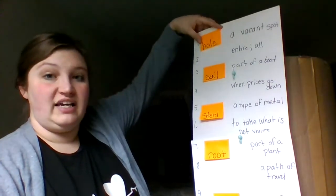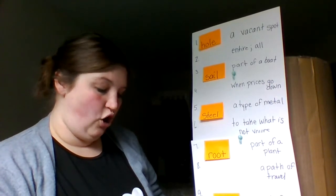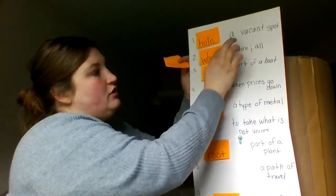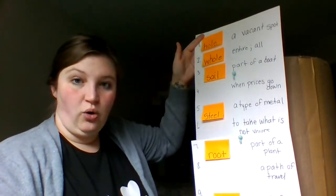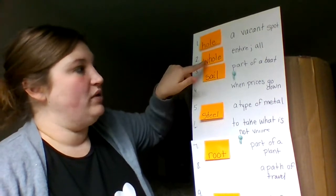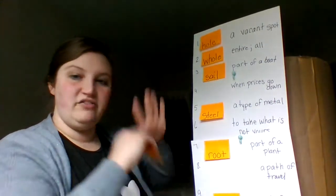I have the word hole, H-O-L-E, but now I'm going to add the word whole, W-H-O-L-E. They sound the same, hole and whole, but they have different meanings and they're spelled differently. Whole with a W means the entire part of it or all of it.